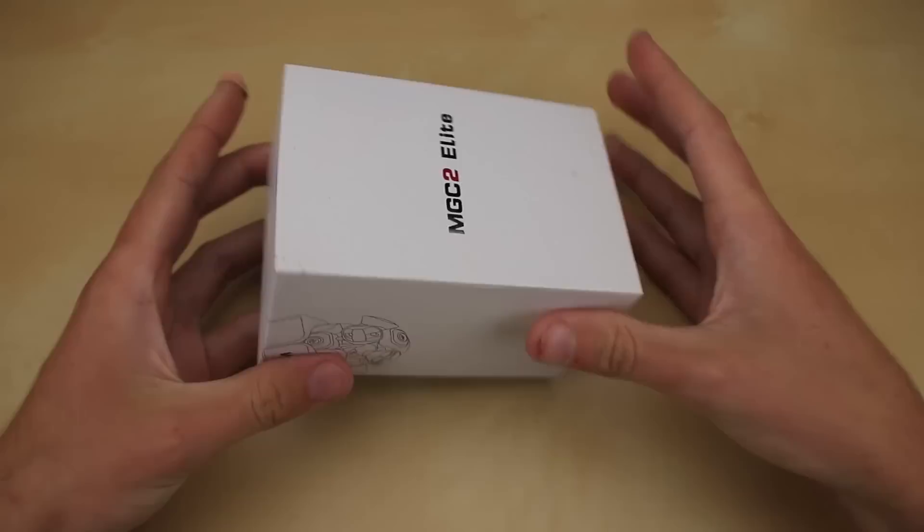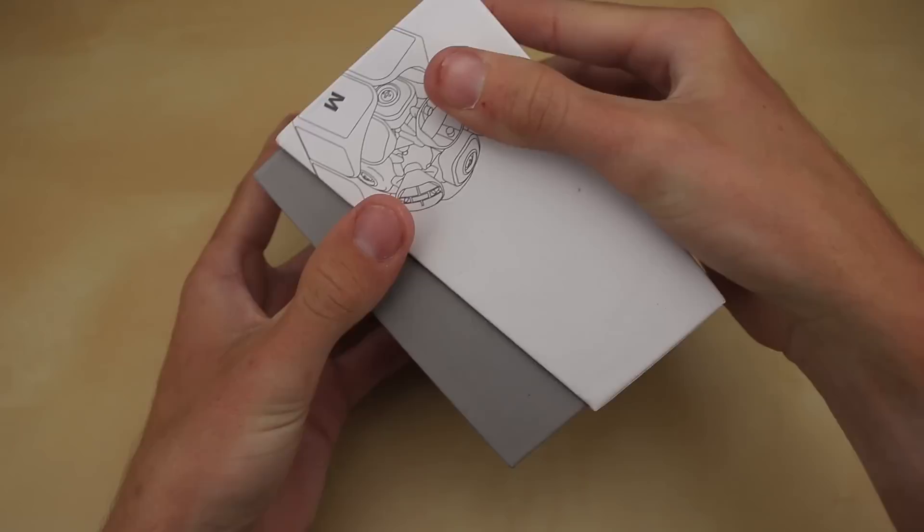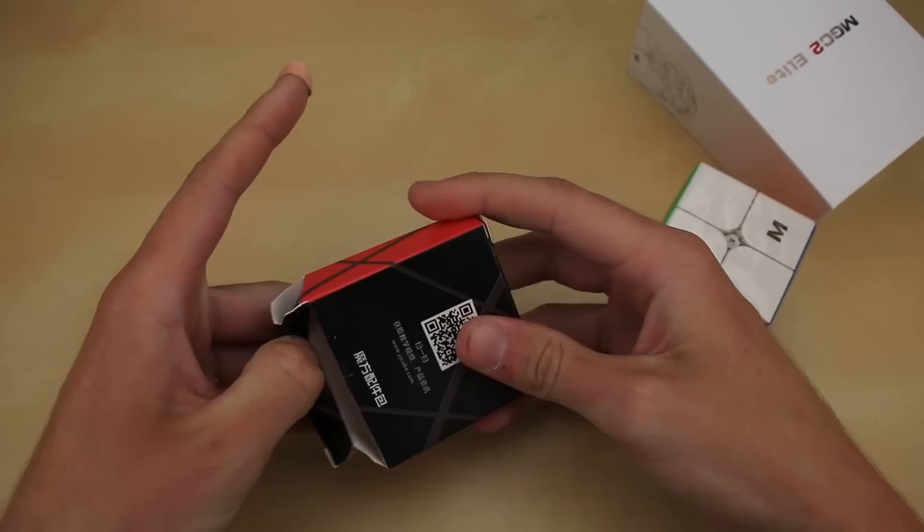Let's start out with the 2x2, the MGC2 Elite, which does of course mean that it is the second version of the MGC 2x2. I don't know how this package opens up, but I guess we kind of just shake it. There we go. So we have a 2x2 and we have a little box of accessories. Let's see what's in here real quick.